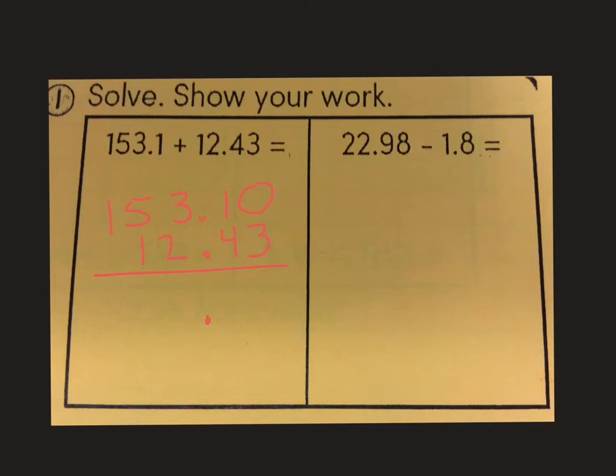When you're subtracting decimals, the first one always goes on top. We line up the decimals. That looks a little goofy, but that's the way it's supposed to be done by place value.